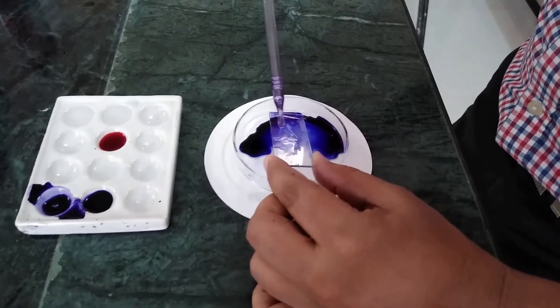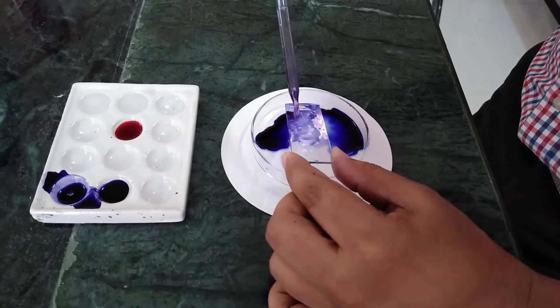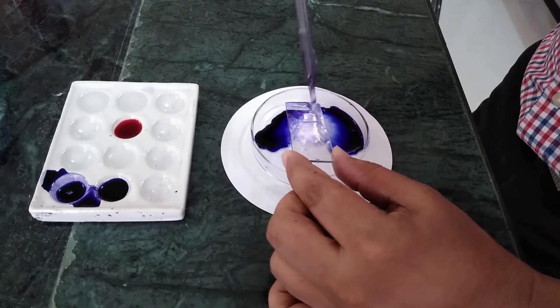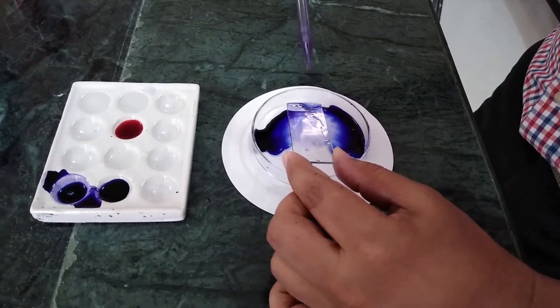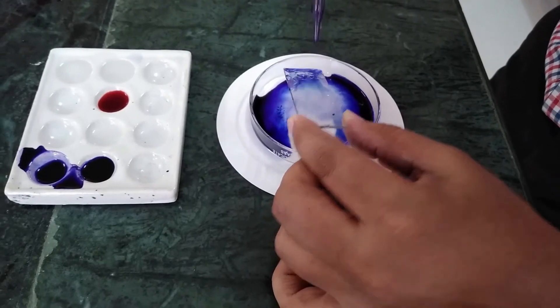After that, gram iodine solution is applied over the slide and washed with clean water. Then, 95% ethyl alcohol is applied over the slide.